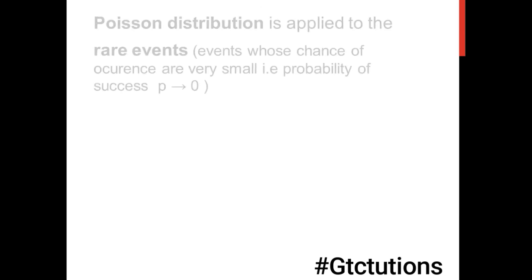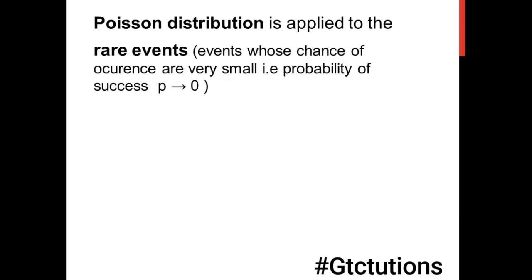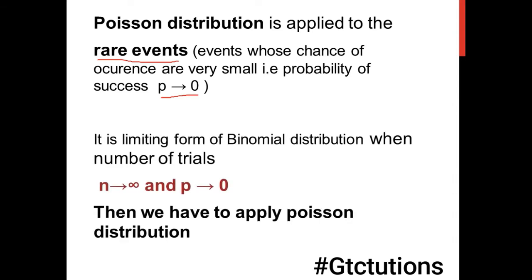Poison distribution is applied to rare events — those events whose probability of occurrence is very small, approaching zero. We use poison distribution when the number of trials approaches infinity and the probability approaches zero. Poison distribution is a limiting form of binomial distribution when n approaches infinity and p approaches zero.